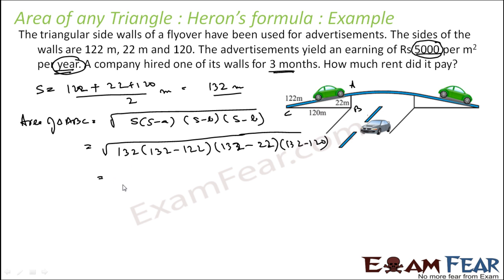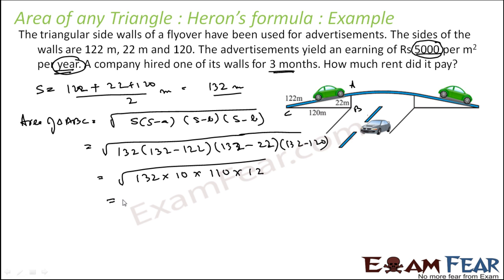This simplifies to root of 132 × 10 × 110 × 12. Solving this gives 1320 meter square. This is the area of the triangular wall.